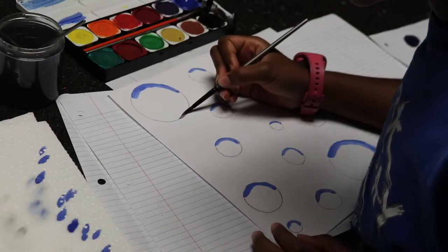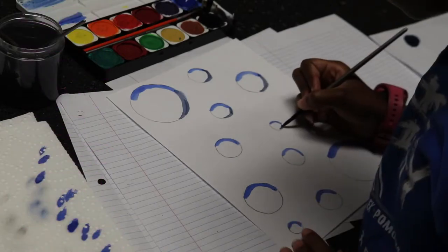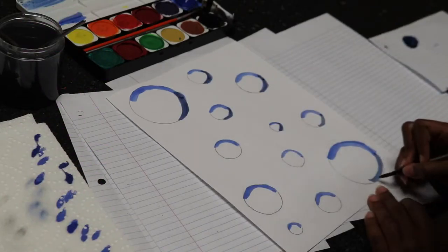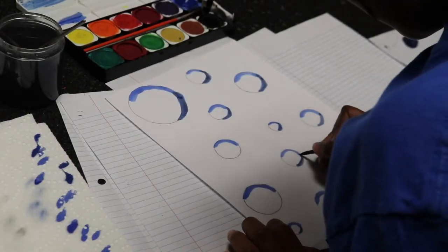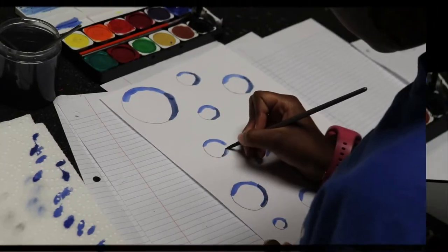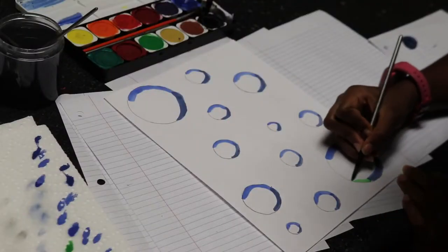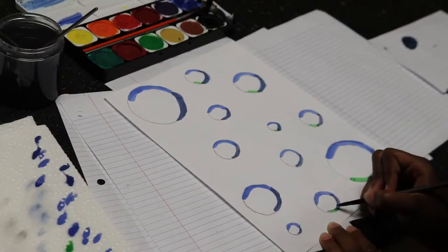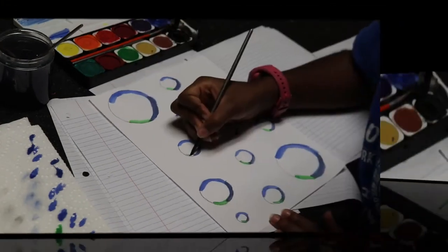Now we're going to get a little bit darker blue and paint it right here. Next we're going to get a light to regular green and put it to the left of the darker blue. Next you're going to paint some purple to the left of the green.